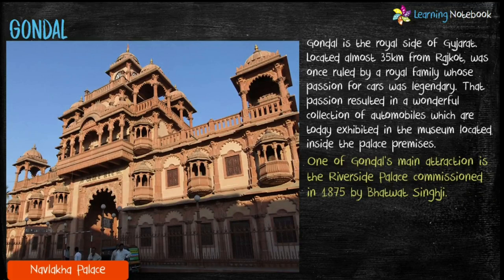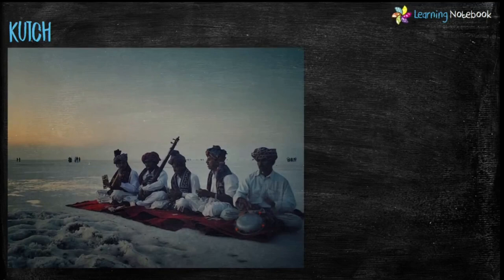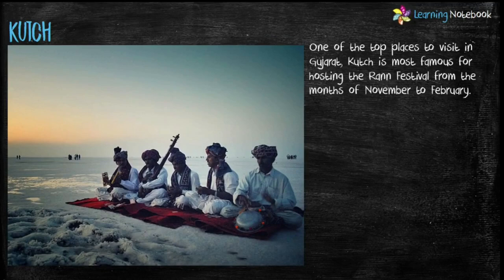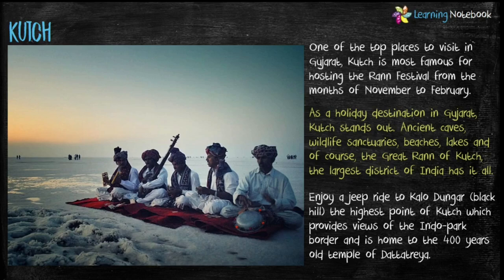Next famous place is Gondal, the royal site of Gujarat. One of its main attractions is the Riverside Palace, and another major attraction is Navlakha Palace. Next is Kutch, one of the top places to visit in Gujarat, most famous for hosting the Rann Festival from November to February. Kutch stands out with ancient caves, wildlife sanctuaries, beaches, lakes, and of course the Great Rann of Kutch — the largest district of India.